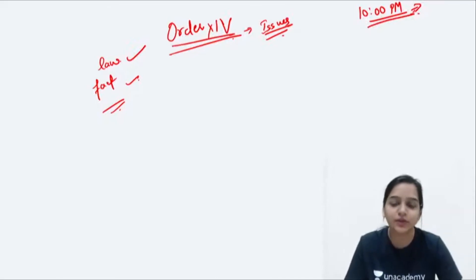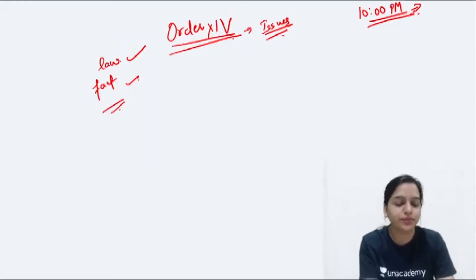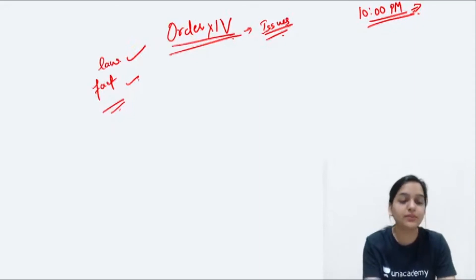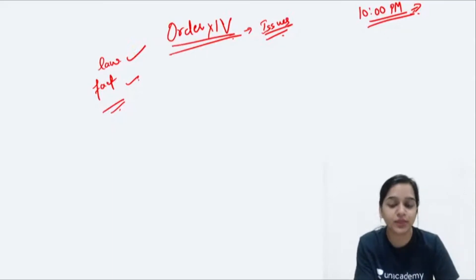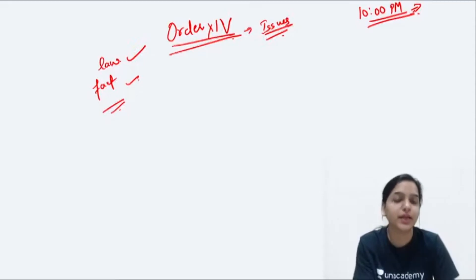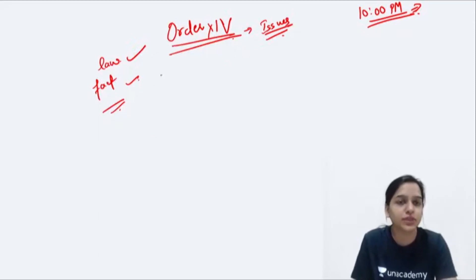Issues can be of law, issues can be of fact also. Issues kab arise hoti hain? Jab ek material proposition of fact or law is affirmed by one party and denied by the other party. So issues fact ke regarding bhi ho sakti hain, issues law ke regarding bhi ho sakti hain.